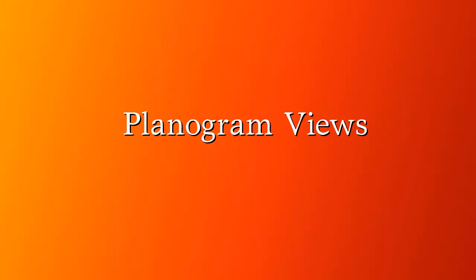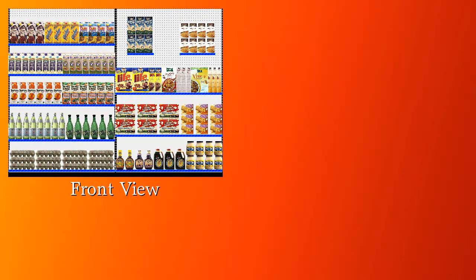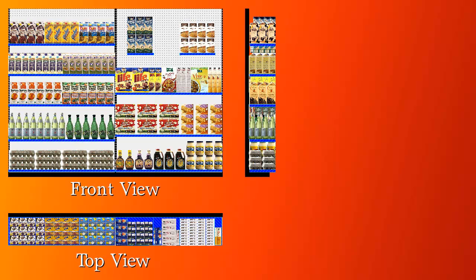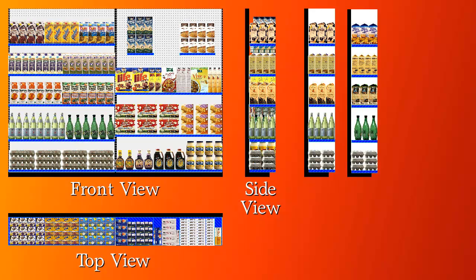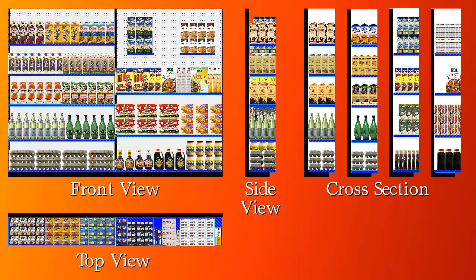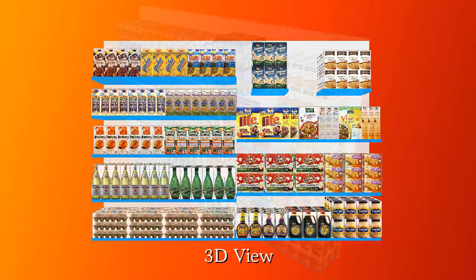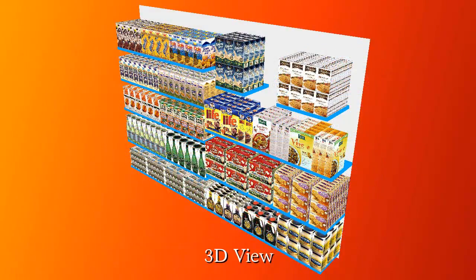The Shelf Logic Enterprise Edition can show your plan in several ways: there's front view, top view, side view, and cross section view shown at various points in the plan. The Enterprise Edition will also display the plan in 3D.